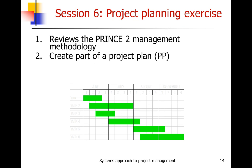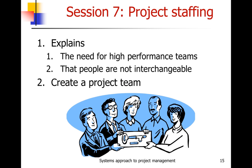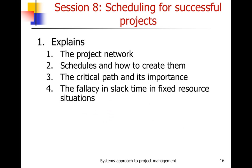Session 6 is a project planning exercise where you review the project management methodology and then create more of the project plan. Session 7 deals with staffing — it explains the need for high-performance teams and that people are not interchangeable. You get a set of resumes and create a project team, and then we see what different teams produce and why certain teams picked certain people for particular tasks. Session 8 covers scheduling: project network schedules, how to create them, the critical path and its importance, and discusses the fallacy of slack time in fixed-resource situations — something not generally mentioned in traditional textbooks.